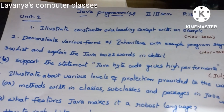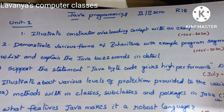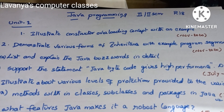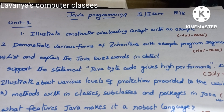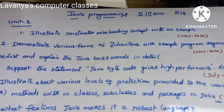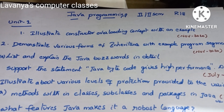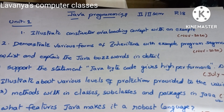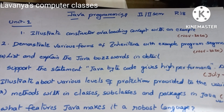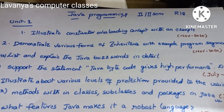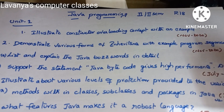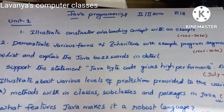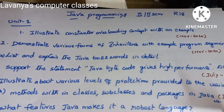Welcome to Lavanya's Computer Classes. In this video I will explain Java programming for CSE second year second semester R18 batch. I will cover JNTU old question paper questions unit-wise from three papers: July 2021, January 2021, August 2021, which are regular and supplementary papers, and November 2020, which is a four-year pattern paper.